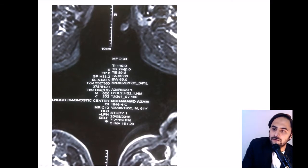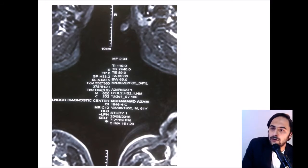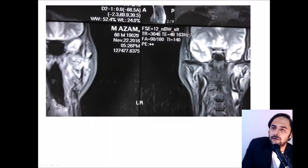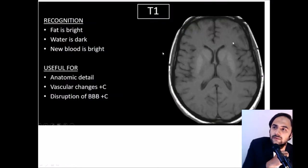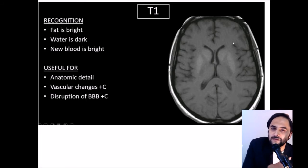For every image, these parameters are different. Some technicians provide the sequence name written on the film — for example, here 'SAT' is written. This is a FATSAT image with TR over 2000 and echo time greater than 80. For fast spin echo, the TR is above 2000 and TE is less than 60, with flip angles between 90 and 180 degrees. For a T1 sequence, the repetition time is less than 800 and the echo time is less than 30.